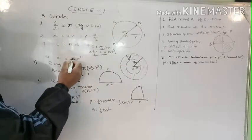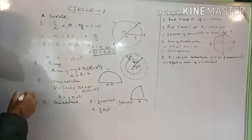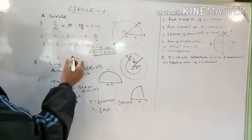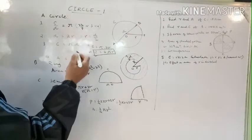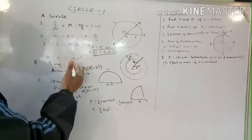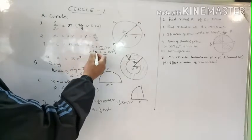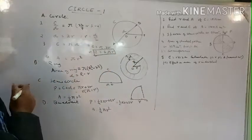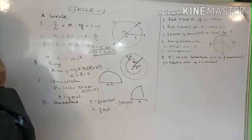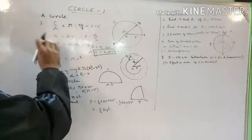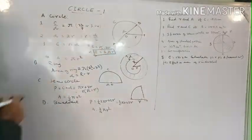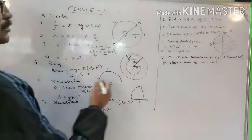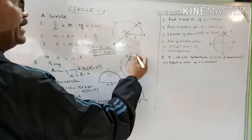The formula for area is πr². Remember: area is two-dimensional, so the unit is square centimeters or square meters — that's why r is squared. Circumference is simply a length, so only r appears there, not r squared.